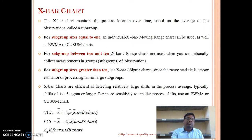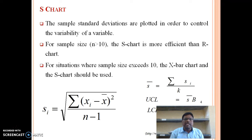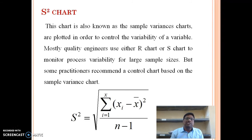Observe the control limits — UCL and LCL — of this S chart. This chart measures the sample deviations, which are plotted to control the variability of the process. When the sample size is greater than 10, the S chart is more effective than the R chart. For situations where sample size exceeds 10, the x-bar and S chart should be used. The S chart is also called the sample variance chart; in it, sample variances are plotted to control the variability of the variable.